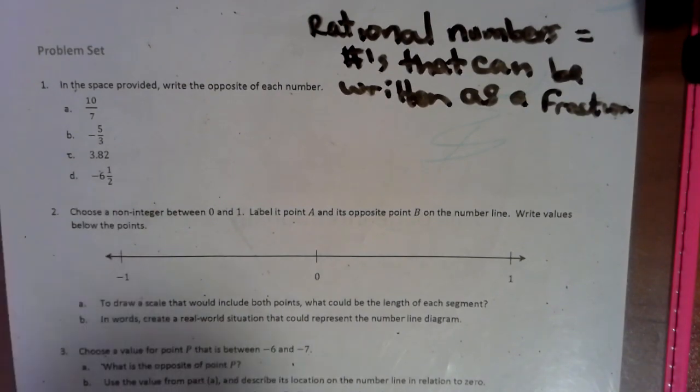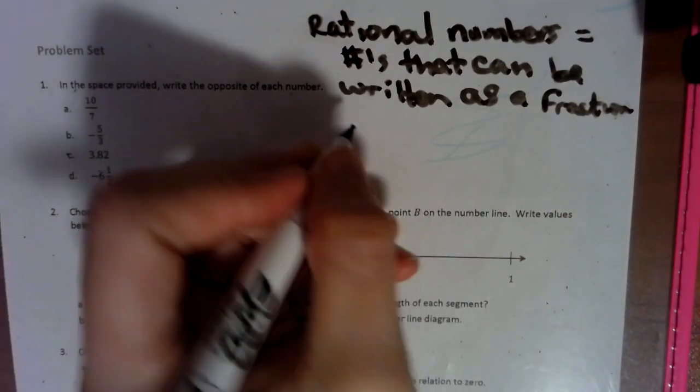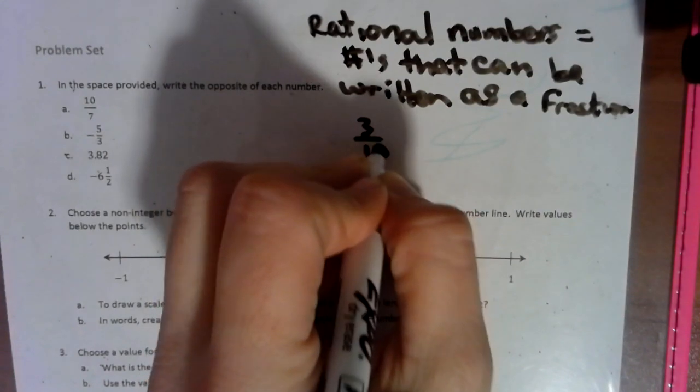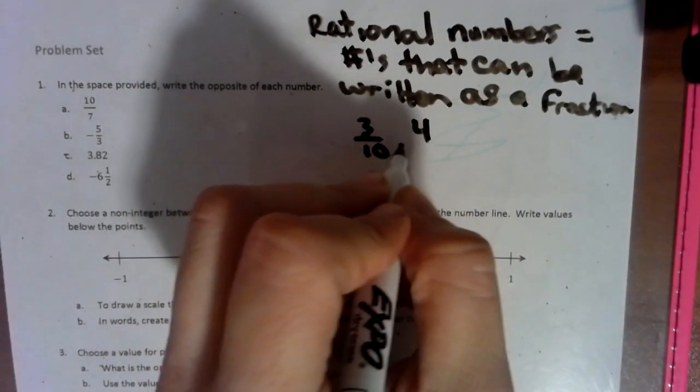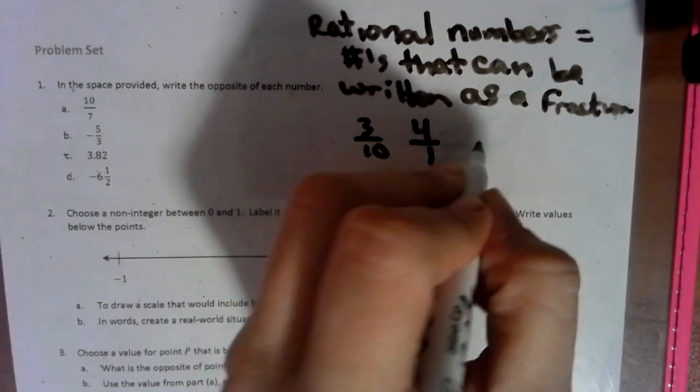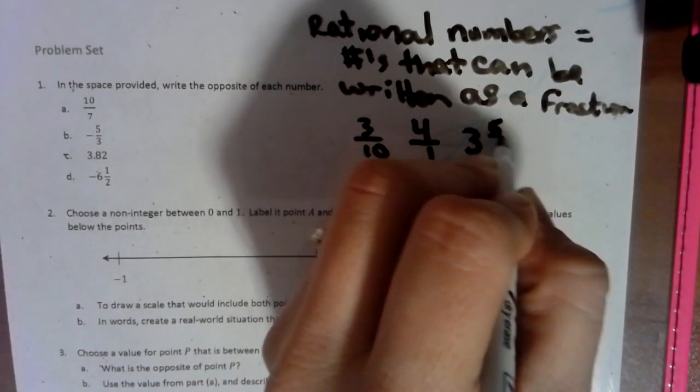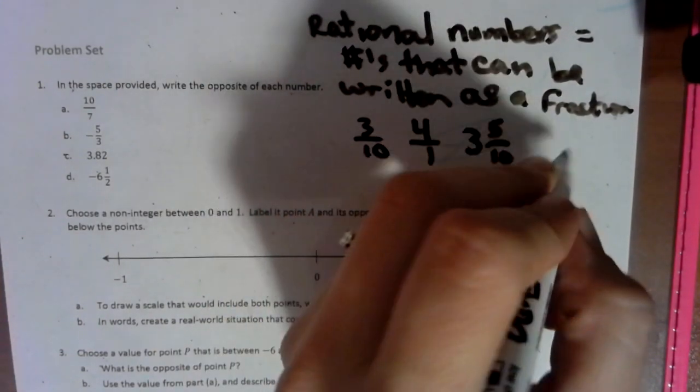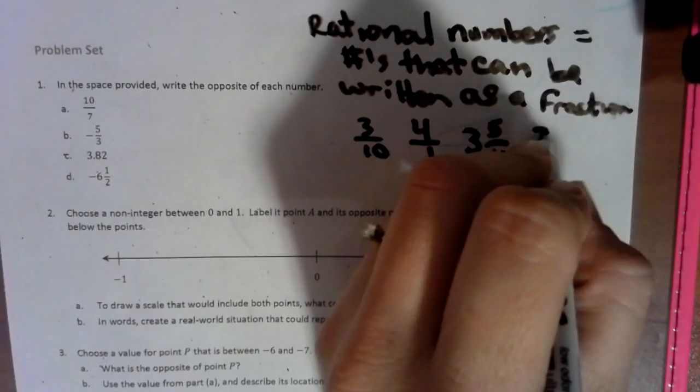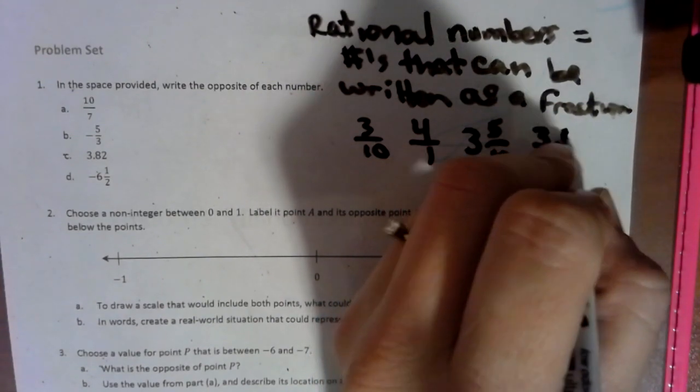Rational numbers are just numbers that can be written as a fraction, so they could actually be a typical fraction, a whole number, because all whole numbers go over one. They could be a mixed number, like three and five tenths, or they could be like a decimal, like three decimal point four.